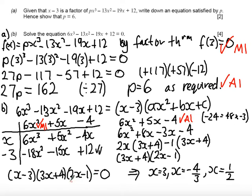If you then manage to factorise to the three linear factors, you've got another answer mark. And if you've got all three terms, so x equals 3, x equals minus 4 over 3, and x equals 1 half, you've got the final answer mark.